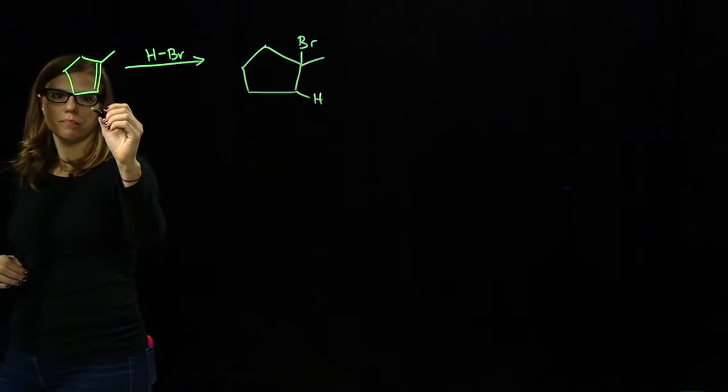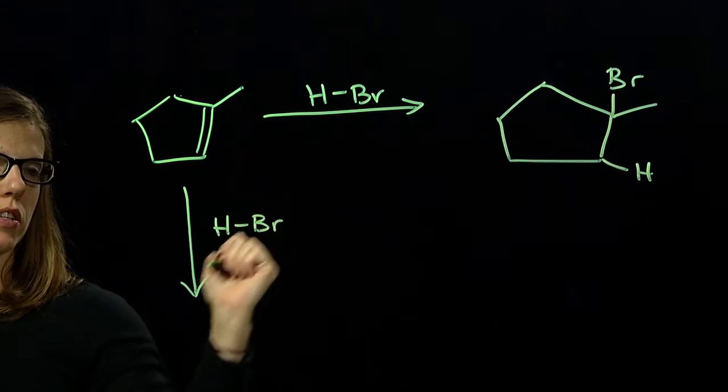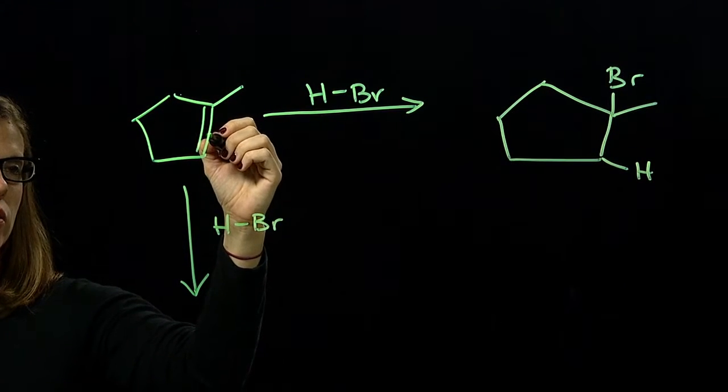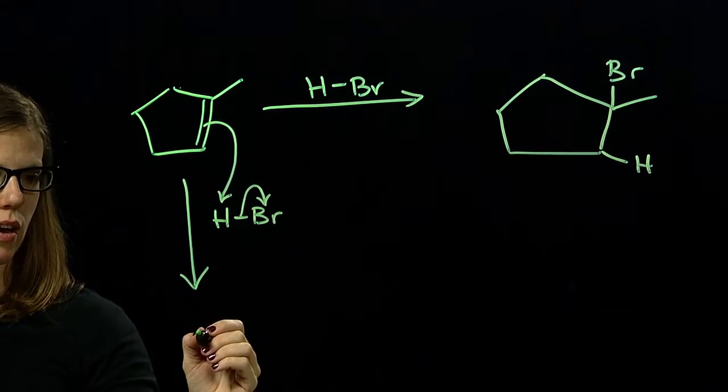The first step of this reaction is protonation of the double bond. The pi electrons of the alkene attack the proton of HBR and kick out a BR-.